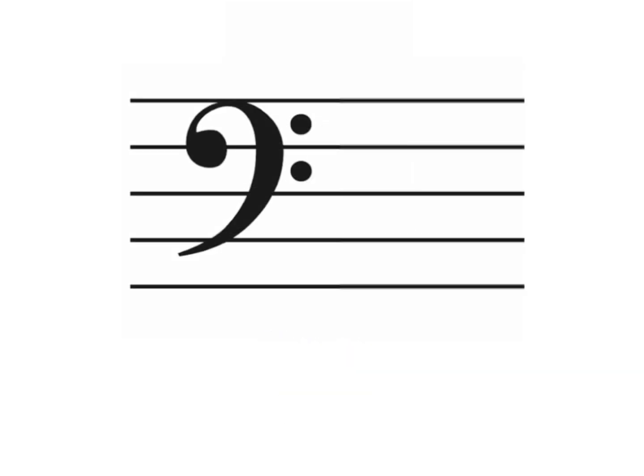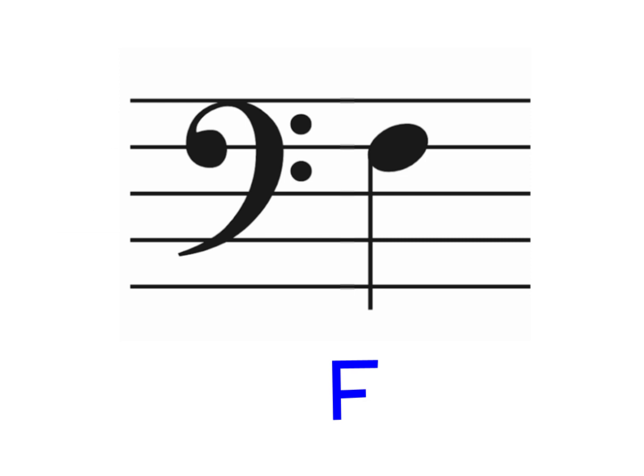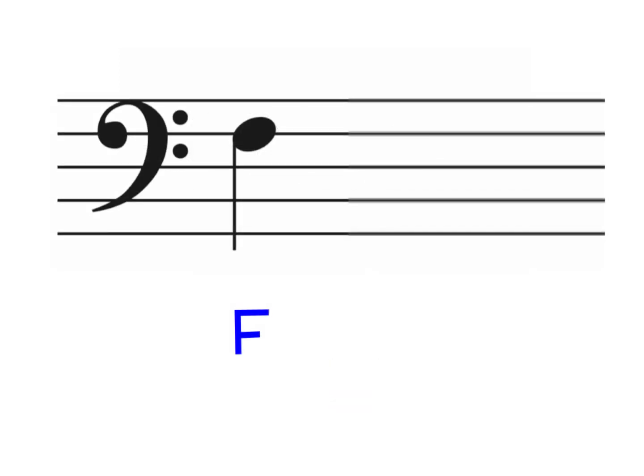The bass clef is sometimes called the F clef because the two dots go above and below the F line. So here's the note F. Since we remember that the musical alphabet is made up of the letters A through G, and since we know that the F is here on the fourth line, the note G must be in the space above it, and the A is the line note above that, and so on. Now there's a couple little tricks to help you remember the names of the line notes and the space notes on the bass clef. Let's take a look.